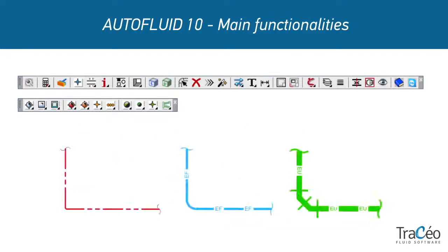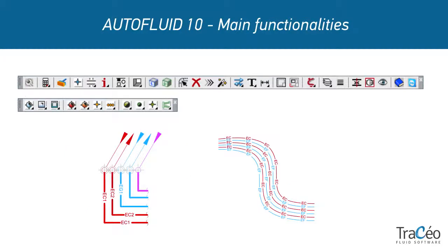There are three types of single line routings: one for heating, one for plumbing, and one for sanitary sewage. Two other routing tools allow you to draw single line pipe sets — the first one applies for rigid pipe sets and the other for embedded under slab pipe sets.